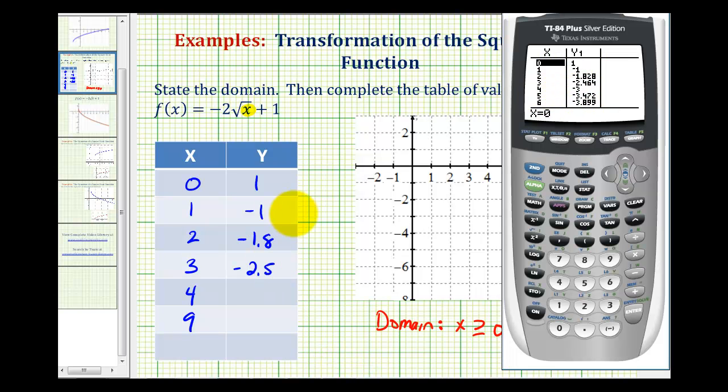When x equals four, y is equal to negative three. And when x is nine, y is equal to negative five.